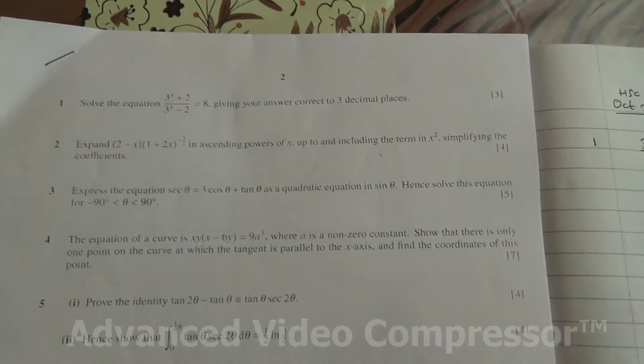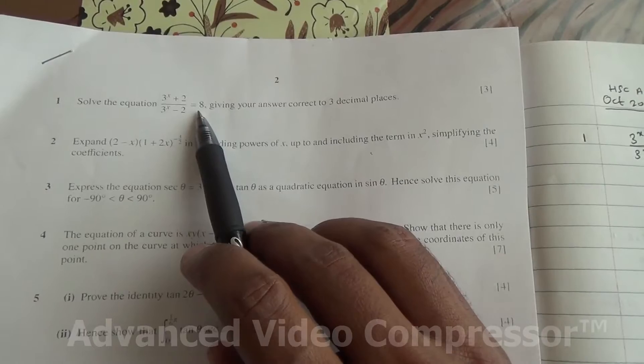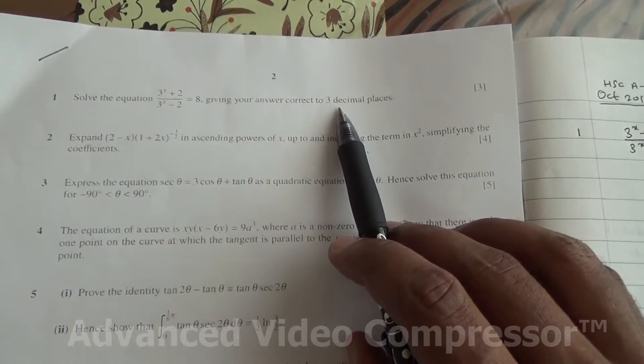Solve the equation 3 to the power of x plus 2 over 3 to the power of x minus 2 is equal to 8. Give your answer to 3 decimal places.